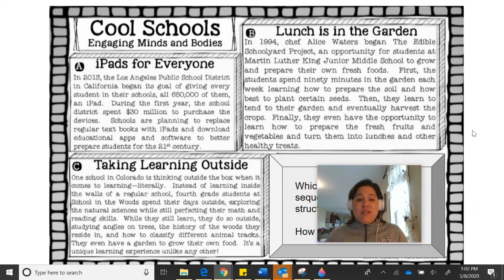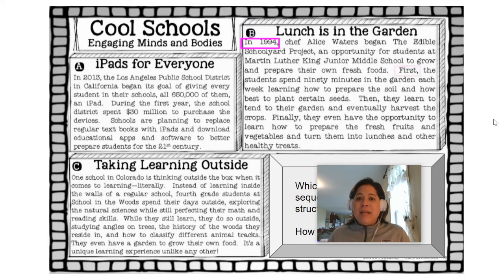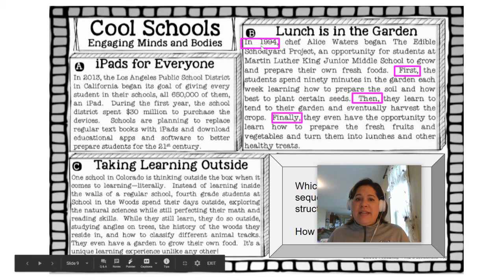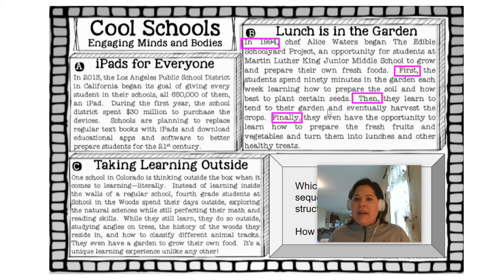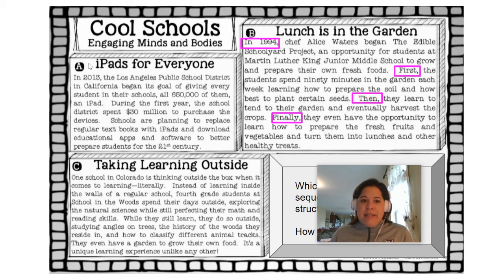Only one of these passages is a sequence passage. If you chose passage B, you are right. We start with a date in 1994, and then we have a clear first, then, finally — a very clear sequence order, starting at one point in time and ending at another. You might say, Mrs. Snyder, passage A says 2013. I know it does, but dates can be used in a text structure that is not sequence. That's the only date there, and there are no other signal words showing a time order. Passage B is our sequence text structure.